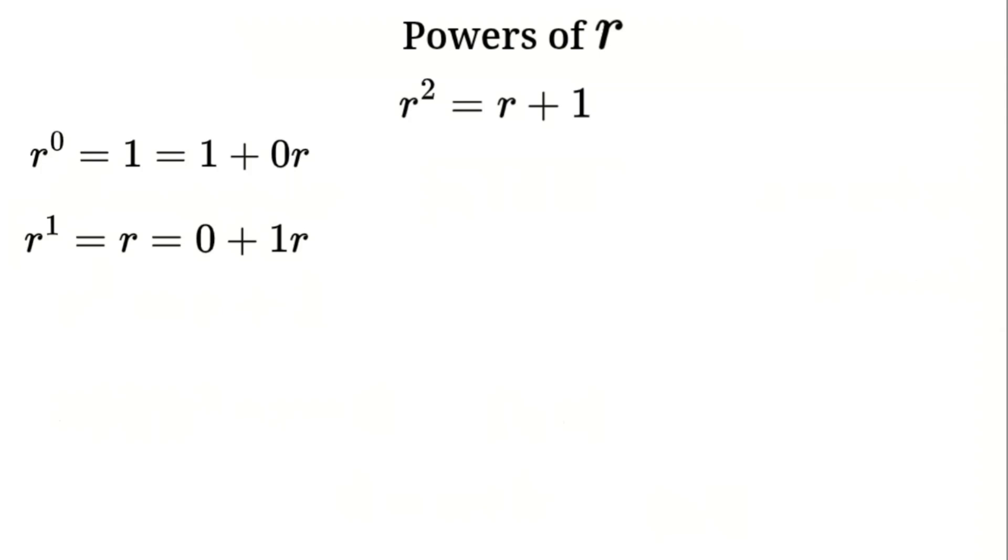For R squared, we use the rule R times R is R squared, which equals R plus 1. So that's 1 plus 1R. Now R cubed, that's R times R squared. So R times R plus 1 is R squared plus R. Since R squared is R plus 1, we get R plus 1 plus R, which is 1 plus 2R.